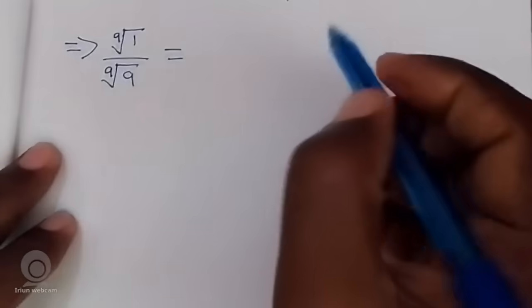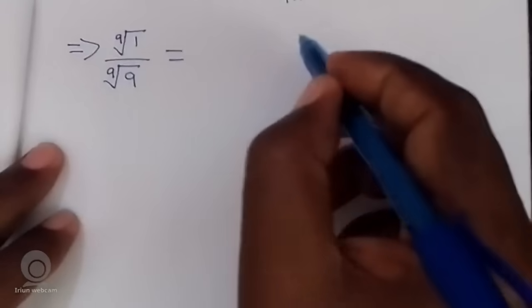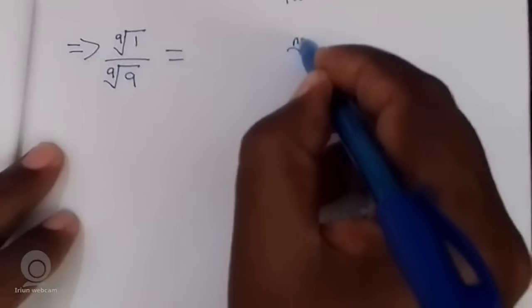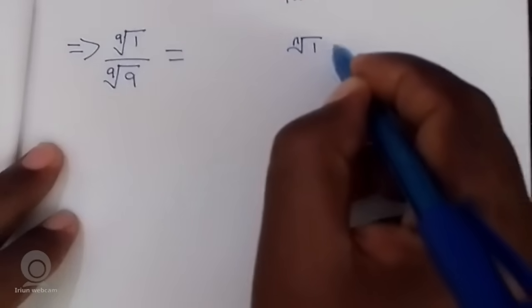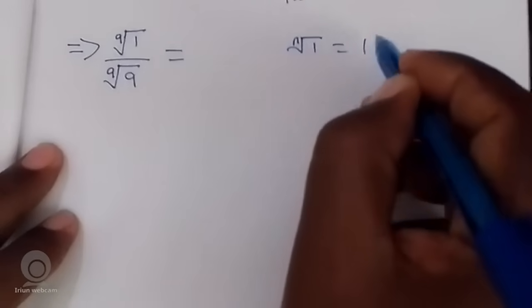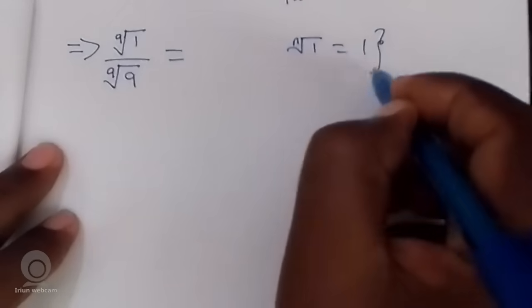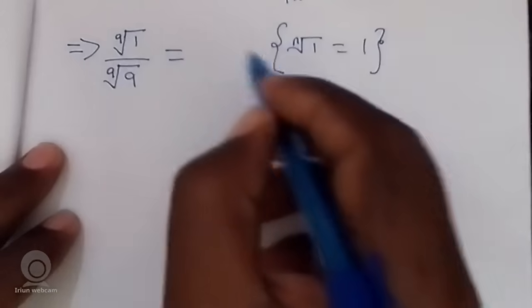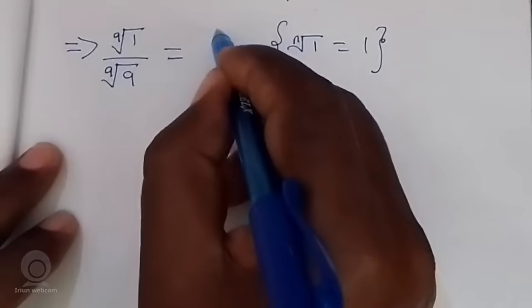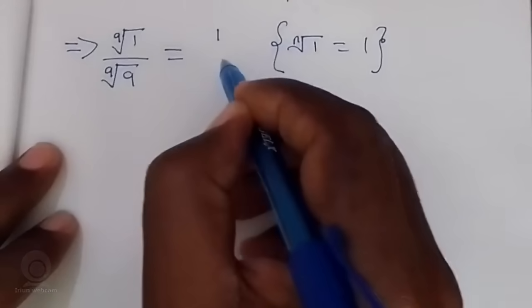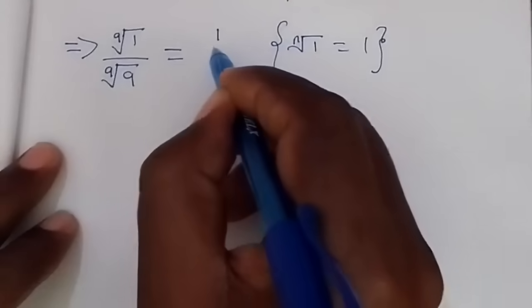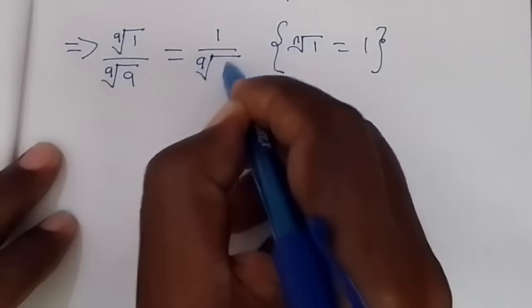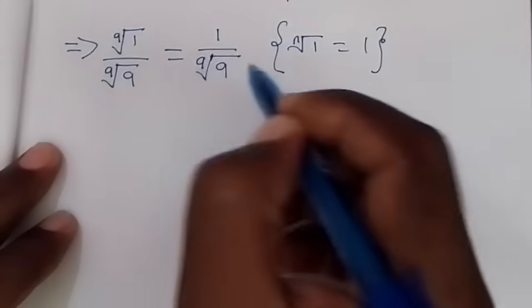By use of the rule that the nth root of 1 is always 1, therefore this one becomes 1 over the 9th root of 9.